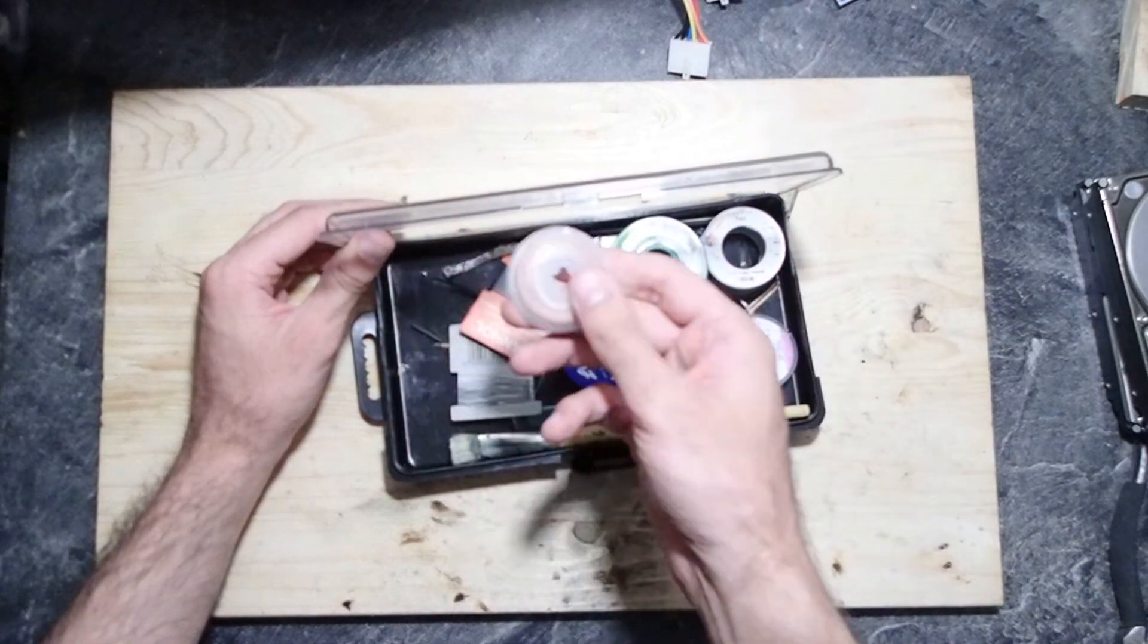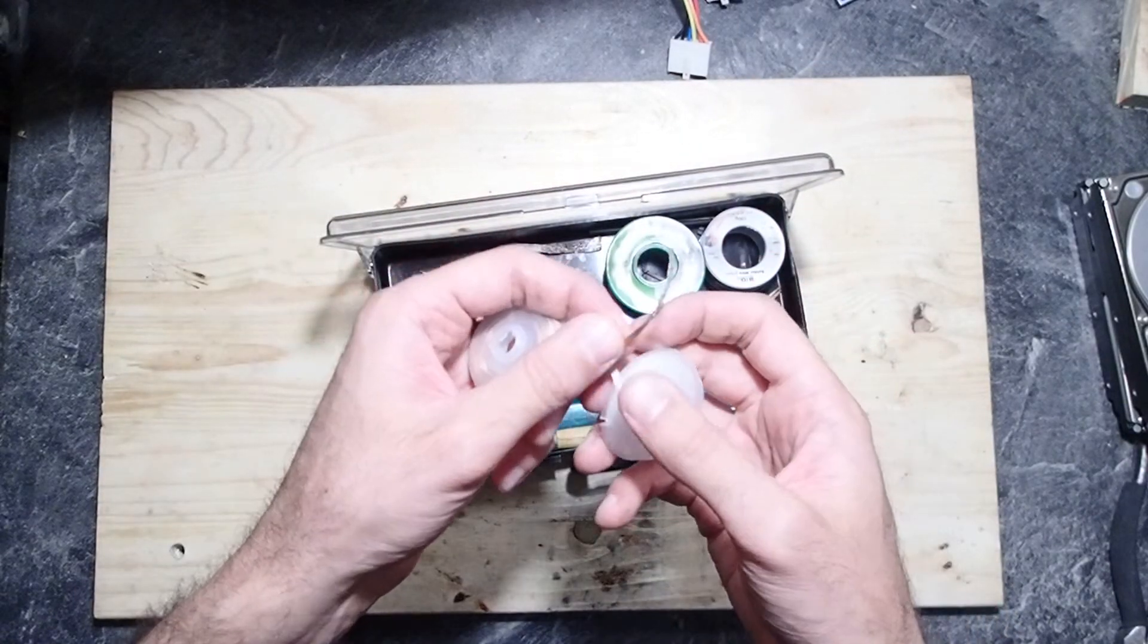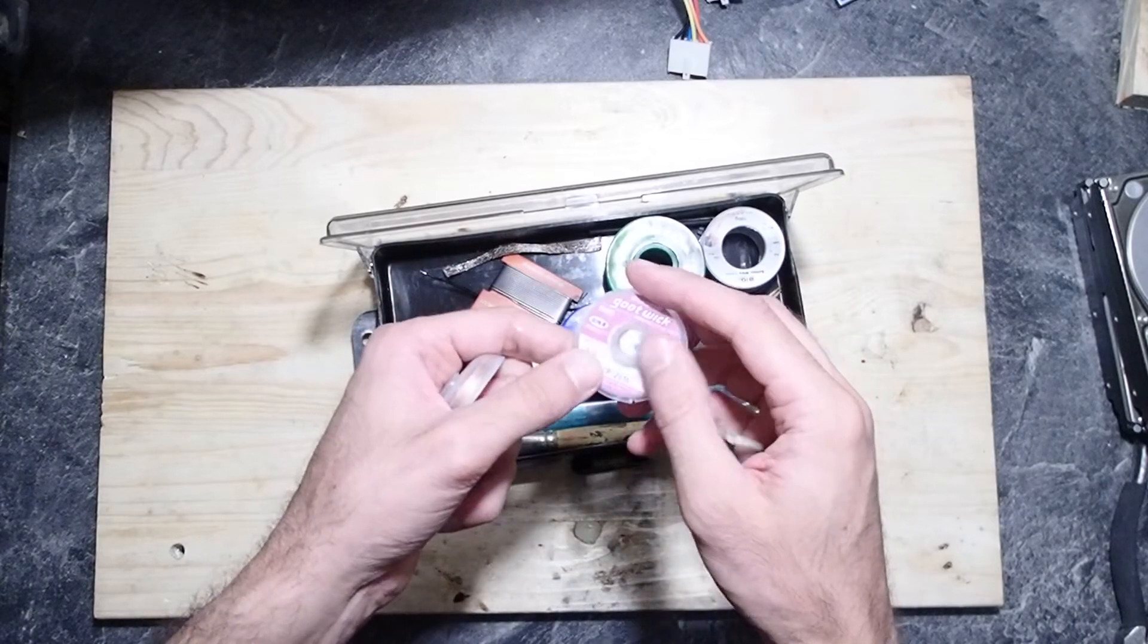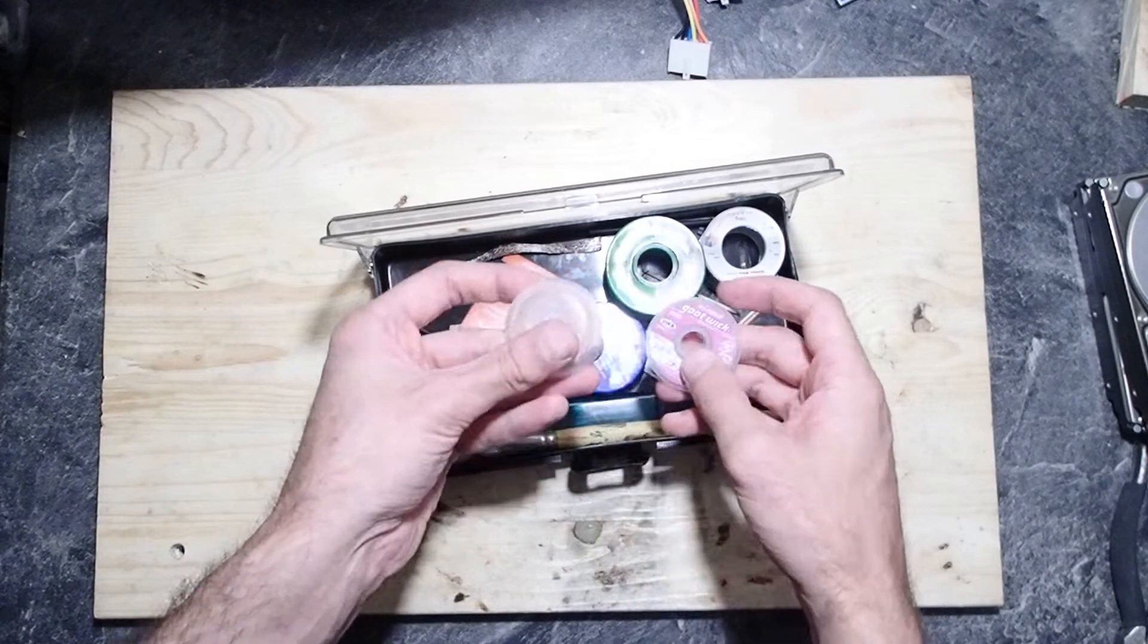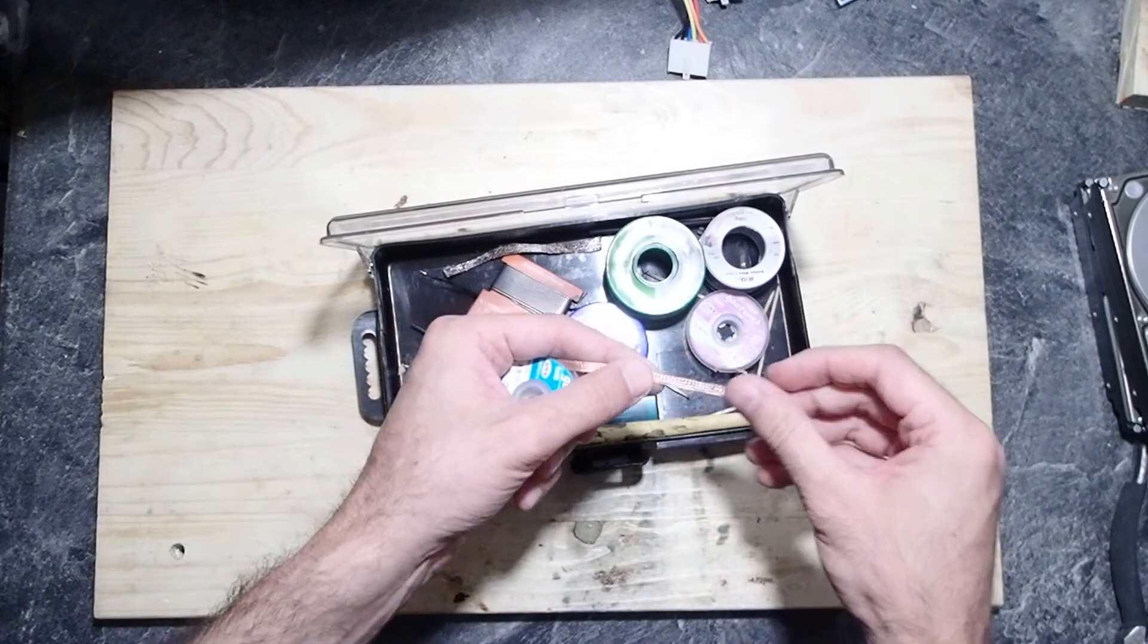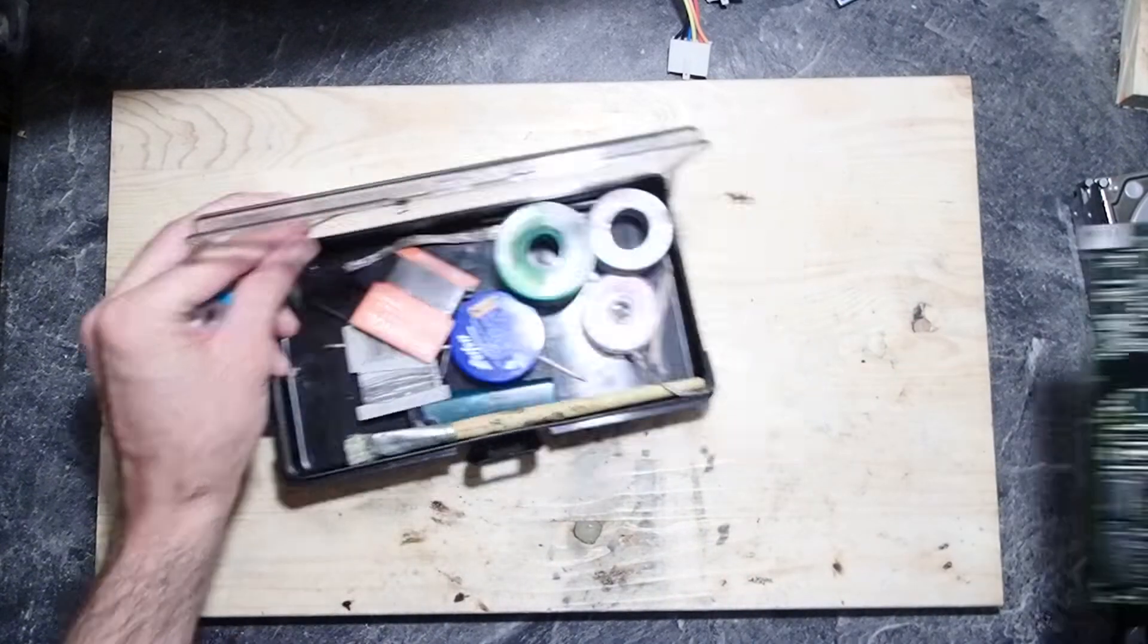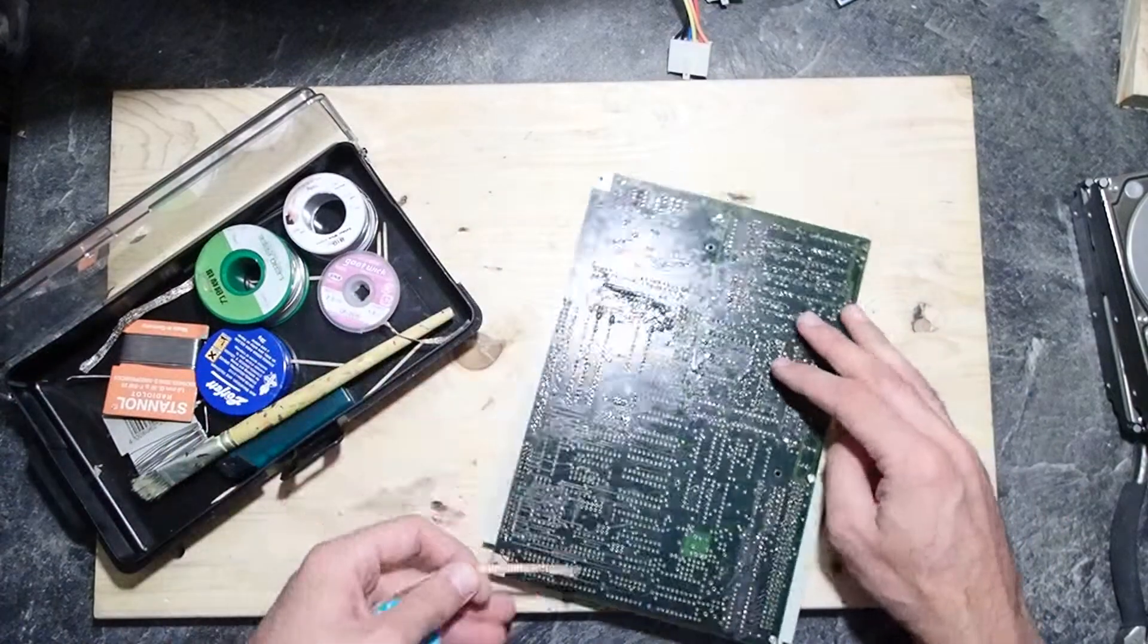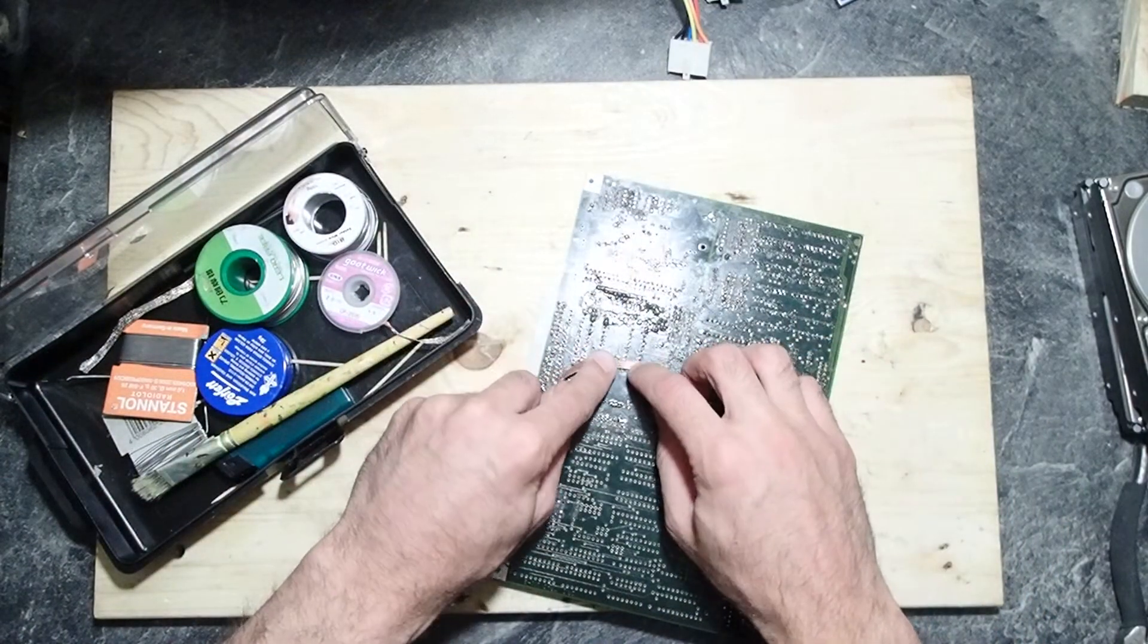So the other cheap solution is to use a soldering wick, and this one is usually made of copper and it's very simple to use.